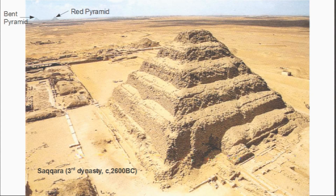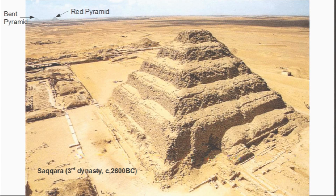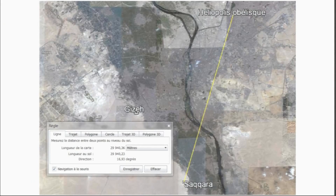What we're going to see now is the relationship between the bent pyramid, Saqqara, and the red pyramid. First of all, let's look at the relationship between the Heliopolis obelisk and Saqqara.